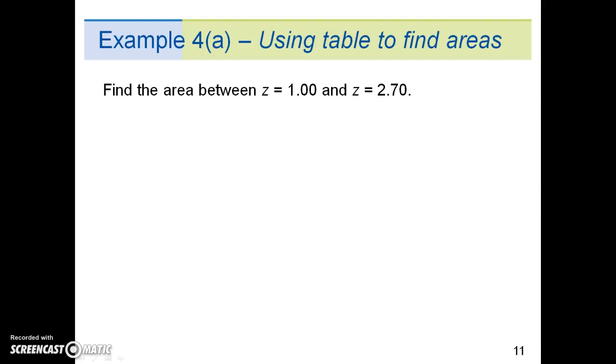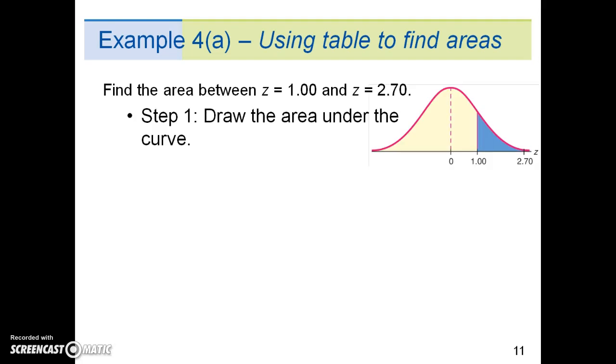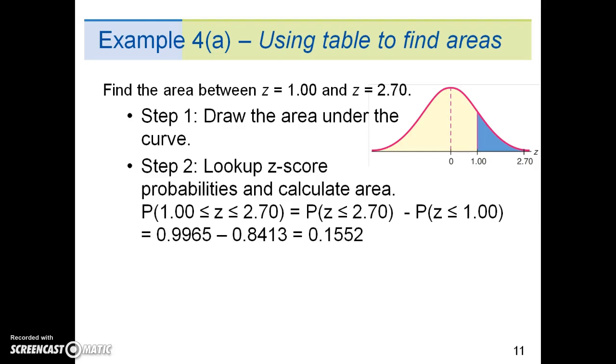Example 4a: Let's say we want to find the area between z = 1 and z = 2.70. First, we draw the area under the curve. Second, we look up the z-score probabilities and calculate the area. To calculate the area, we take the probability of the upper, z ≤ 2.70, subtract the probability of the lower range, z ≤ 1.00. Finding those probabilities in the back of the book, the resulting answer is 0.1552.